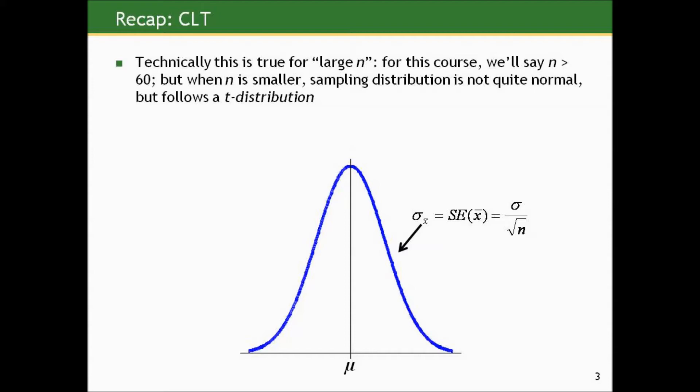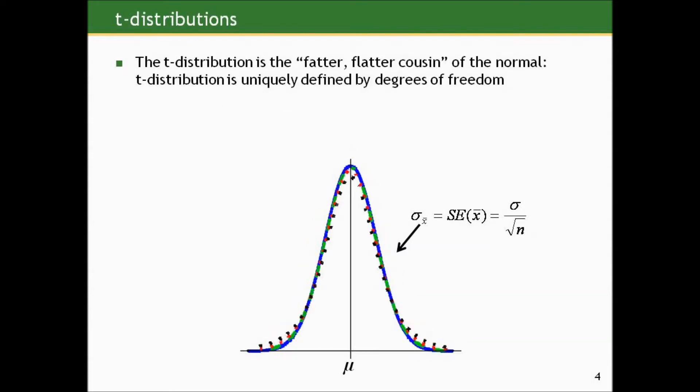When n is smaller, we still know what would happen had we taken multiple random samples and plotted the sample means, but it turns out the distribution isn't quite normal. It instead follows something unimaginably called the T distribution. If you were walking down the street and you saw a T curve, you'd think it was normal, unless it was standing next to a normal curve — only then would you see the slight differences. A T curve, like a normal curve, is symmetric and bell-shaped, but it's sort of the fatter, flatter cousin of a normal.